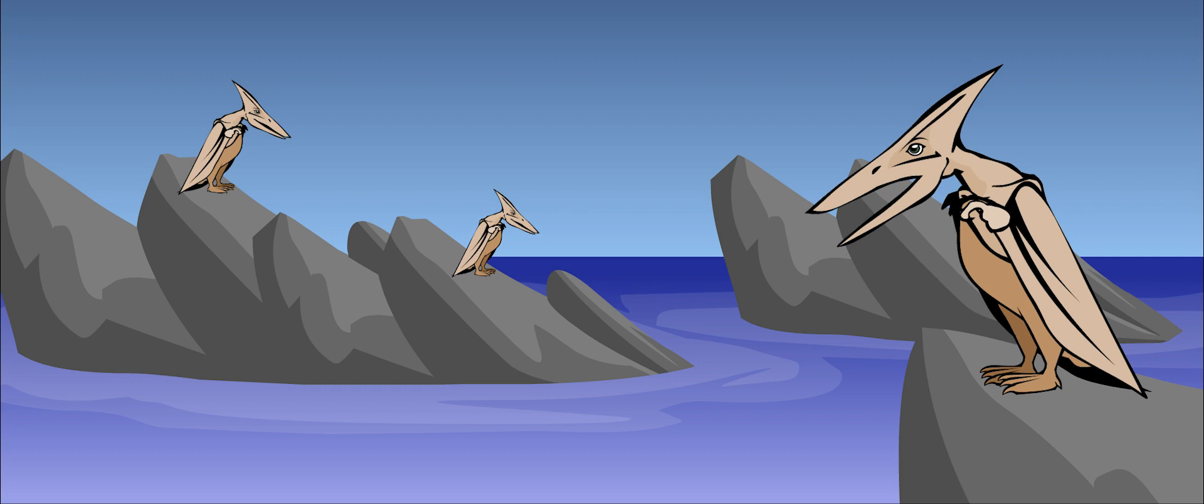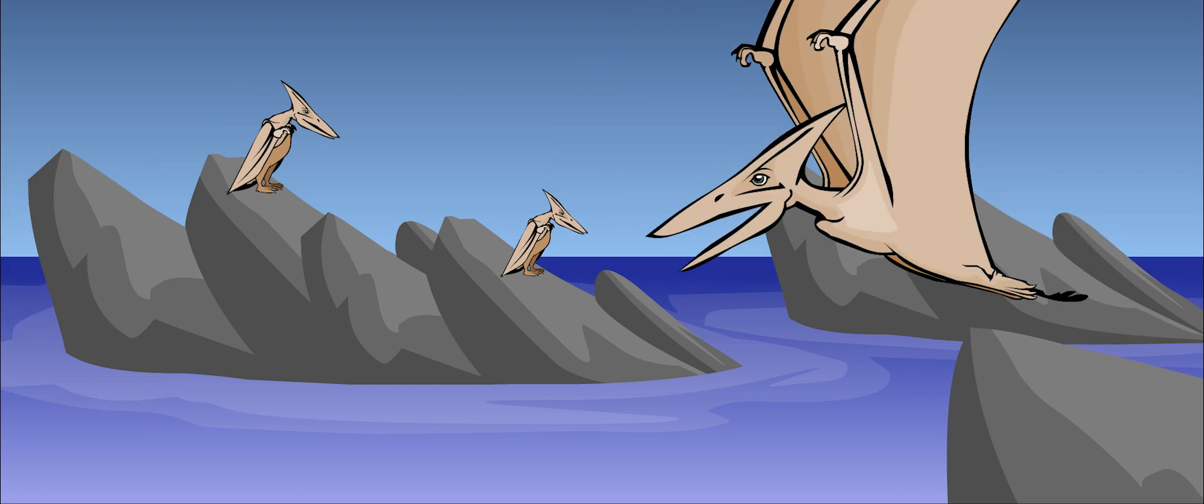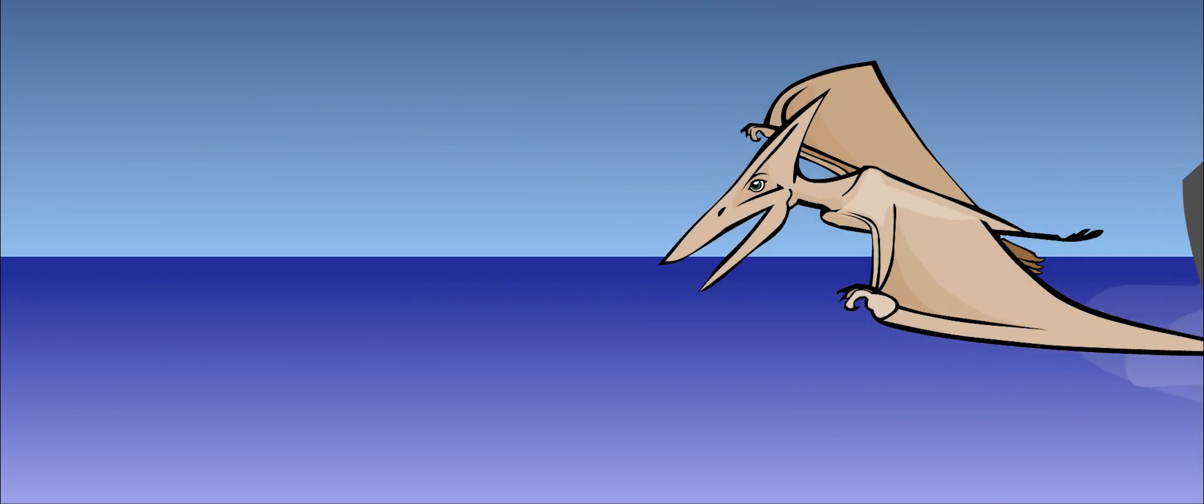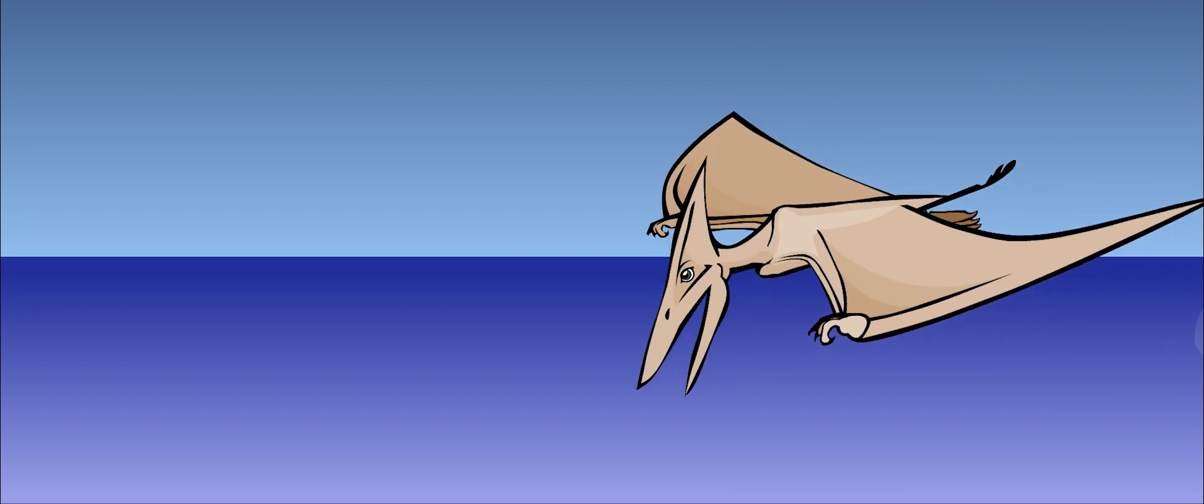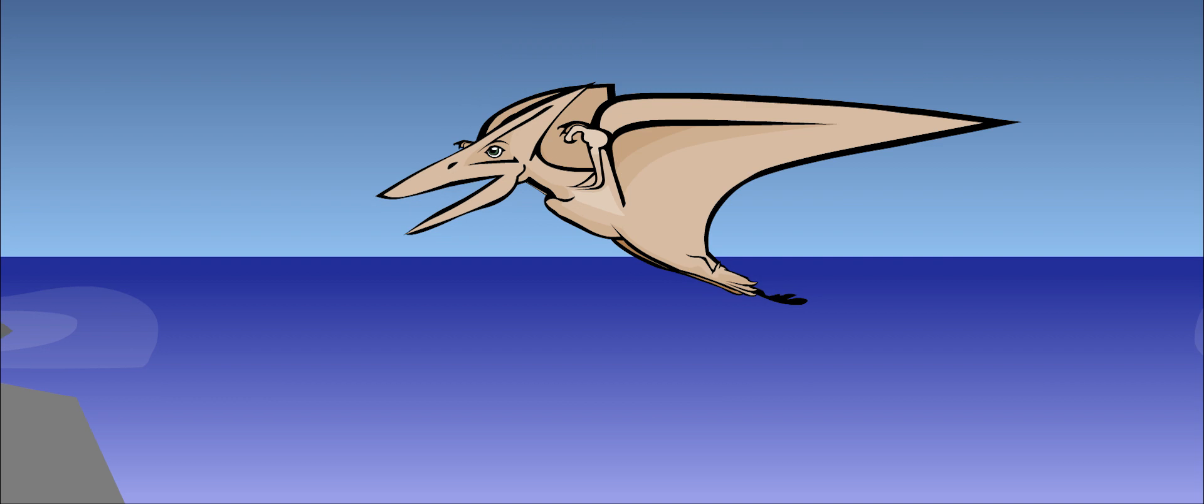Although they had no teeth, pteranodons were carnivores, meaning that they ate meat. They hunted for fish by flying low over oceans and lakes. They may have hunted like pelicans, scooping fish straight out of the water and swallowing them whole.